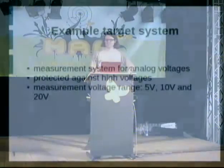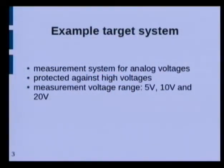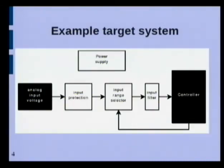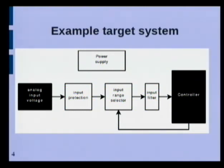This sample system will measure analog voltages which come from outside, so it must protect against high voltages because you don't know what the user will connect to the input. The desired voltage ranges are 5V, 10V, and 20V. This system looks like this: there is a black box coming from outside which is the analog voltage to measure, another black box which is the controller consisting of the analog-to-digital converter and an output to select the input range, and the white boxes are the power supply for the analog system and also the microcontroller.